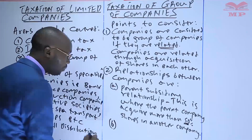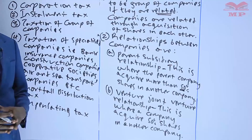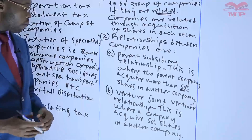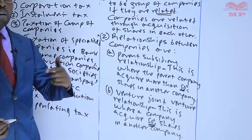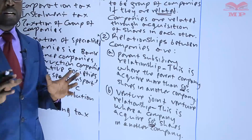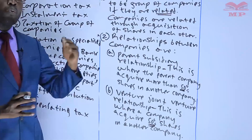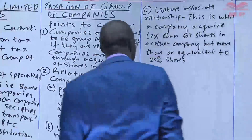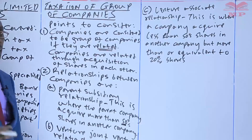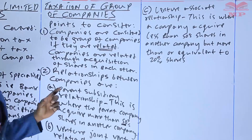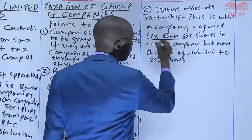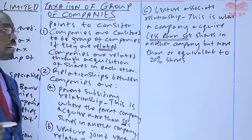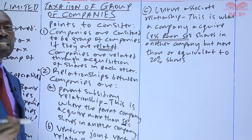Relationship number two is called a joint venture relationship. This is where a company acquires exactly 50% shares in another. We are not talking about more, and we are not talking about less — exactly 50%. That company is considered to be jointly controlling the company it has shares in, together with other companies. Relationship number three is called an associate relationship. This is where a company acquires less than 50% but more than or equivalent to 20% shares in another company. The company whose shares have been acquired is called an associate.